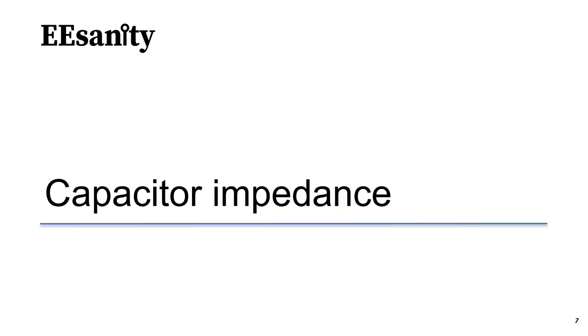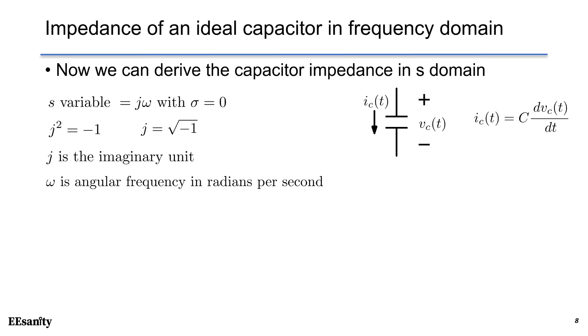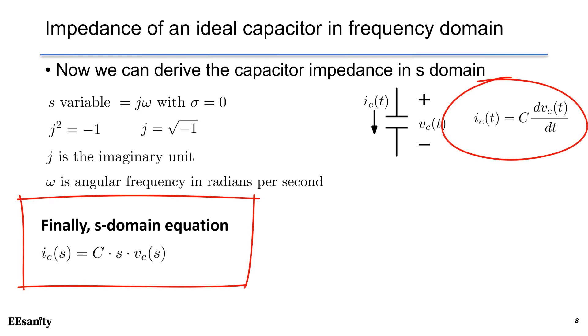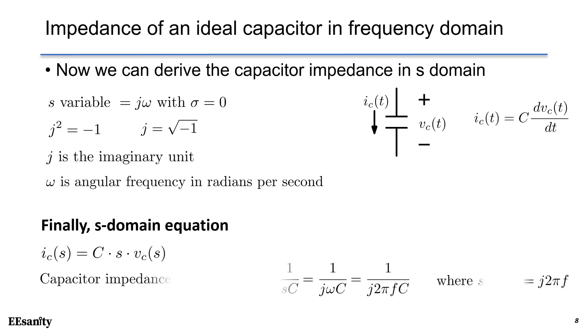Capacitor impedance. Now, we can apply the Laplace transform on this differential equation, and use S variable as j omega, and sigma as zero. Finally, we can write S domain equation as I sub C equals to C times S times V sub C. Notice that the variable is S. We have converted the time domain T variable into the S domain using S variable.